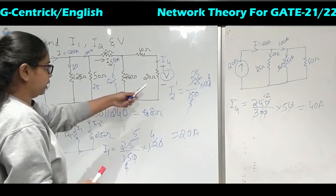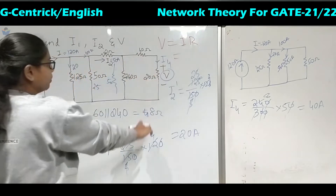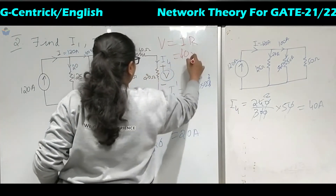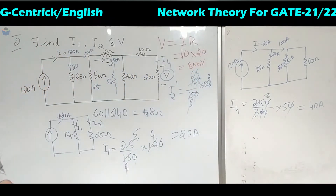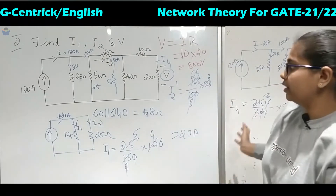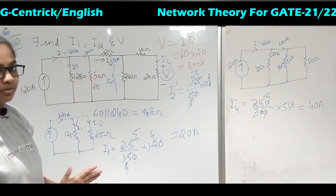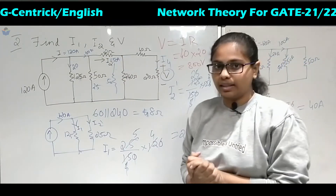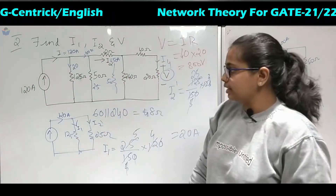Now we have to calculate the value of V. Using Ohm's law: V equals I into R. The total current flowing in this branch is 40 amperes, and the resistor value given is 20 ohms, so V is 800 volts. Whenever one source is given in the circuit, we use the reduction technique to find the total current. We reduce to get the equivalent resistance, divide the voltage by R equivalent, and get the total current. If it is directly given as a current source, we take that value directly.